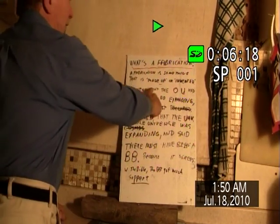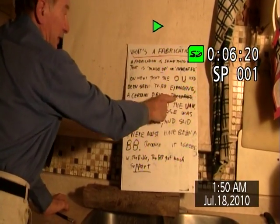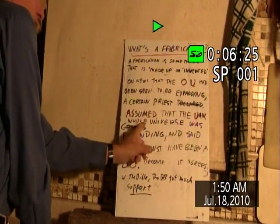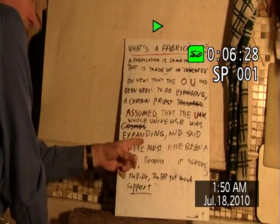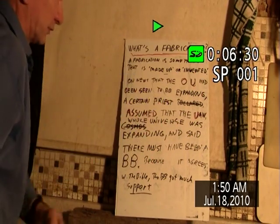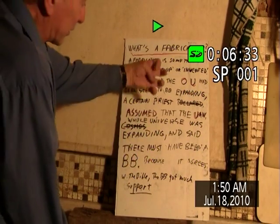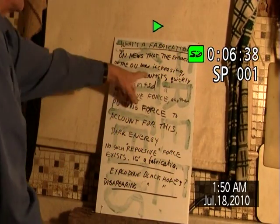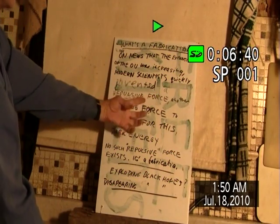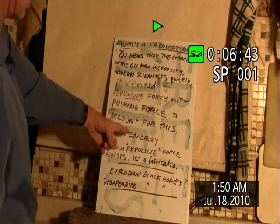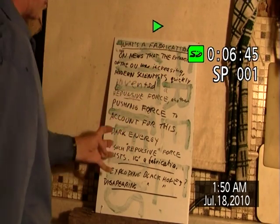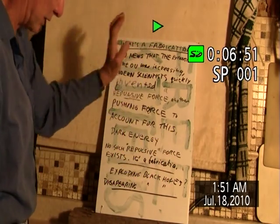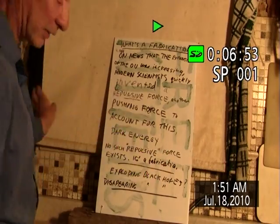What's the fabrication? A fabrication is something made up or invented in science. On news that the observable universe had been seen to be expanding, a certain Belgian priest assumed the whole universe was expanding, and said there must have been a Big Bang. Because it agrees with the Bible, it got a lot of support. In 1998 they found out that the expansion was increasing, so scientists invented a repulsive force — they called it dark energy. These repulsive forces don't exist; they're fabrications. Exploding black holes — that doesn't happen. Disappearing black holes — another fabrication.